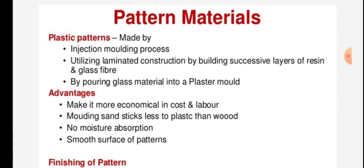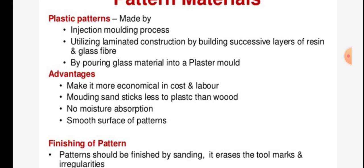Plastic patterns are made by injection molding, by utilizing laminated construction — building successive layers of resin and glass fiber — or by pouring glass material into a plaster mold. Advantages include: they are more economical in cost and labor, they adhere and stick less to plastic than to wood, there is no moisture absorption, and they provide a smooth surface.